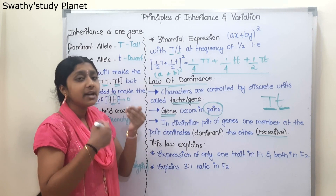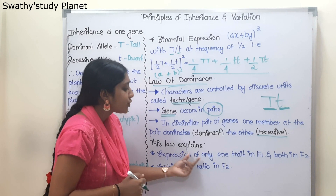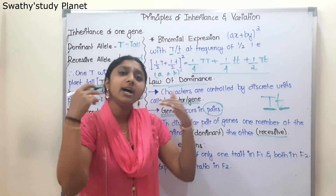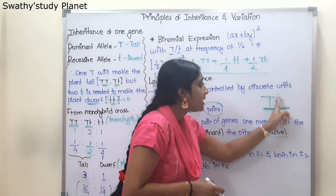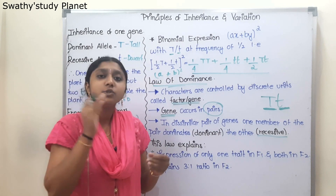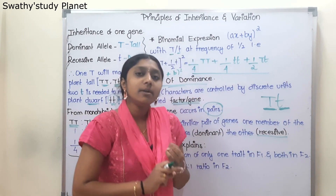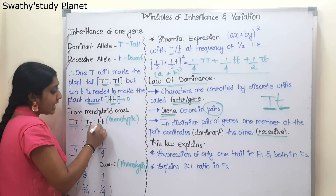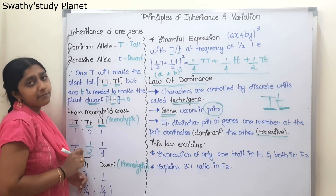The law of dominance is explained by the expression of only one trait in the F1 generation and both traits reappearing in F2. In the F1 generation, one capital T is dominant, so only tall plants are seen. In the F2 generation, we see tall plants and dwarf plants reappear.